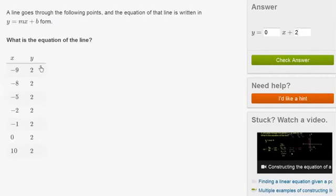You could substitute back in. You could say, okay, well, if y is equal to 0x plus b, that means that y is equal to b. Well, y is always equal to 2, no matter what point you pick. So b is equal to 2.